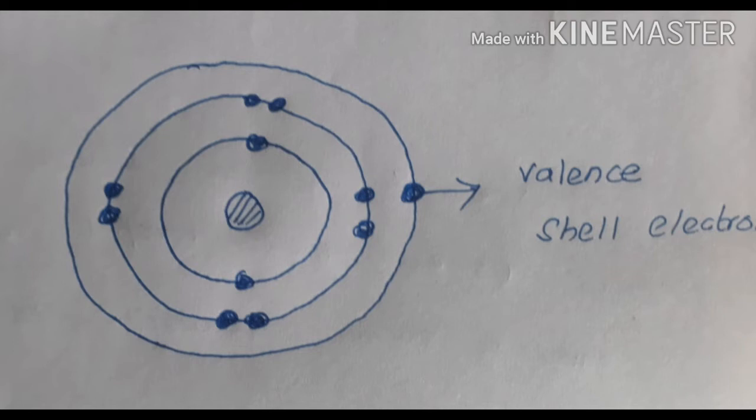I can see blue dots here. The first shell consists of two blue dots, the second shell consists of eight blue dots, and the third shell consists of one blue dot.